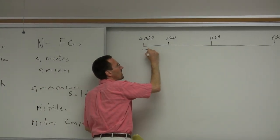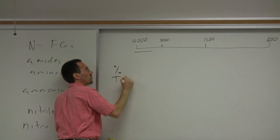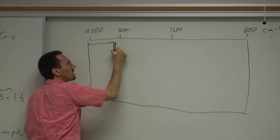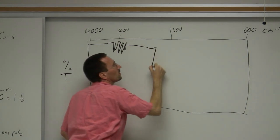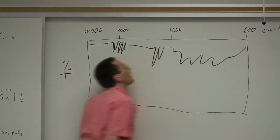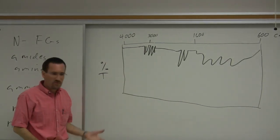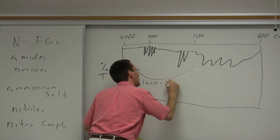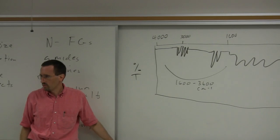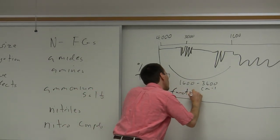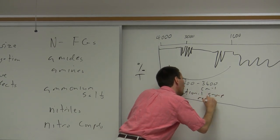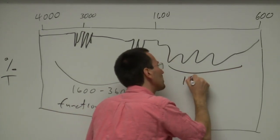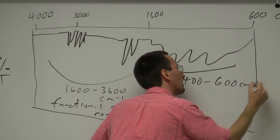If you have an IR spectrum, you're going to have percent T on your axis. The region from about 1,600 to about 3,600 cm⁻¹ is the functional group region — that's generally what I look at. There's also information to be had from about 1,400 to about 600 wavenumbers: that's the fingerprint region.